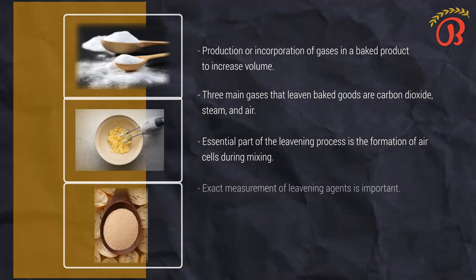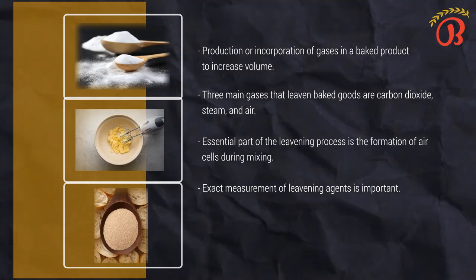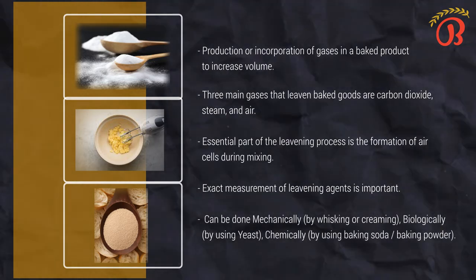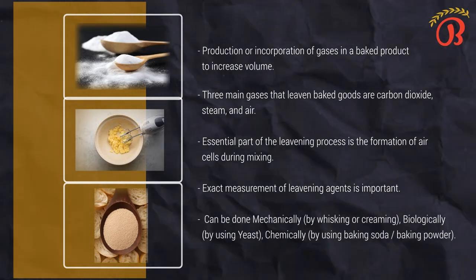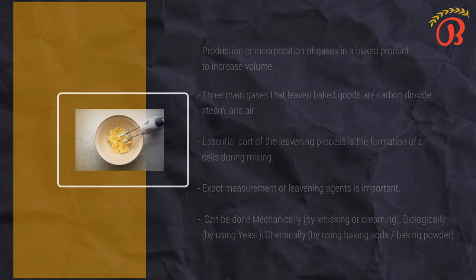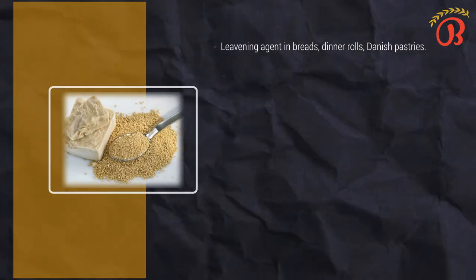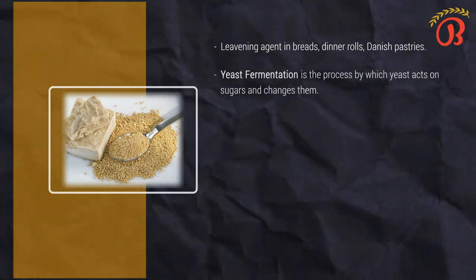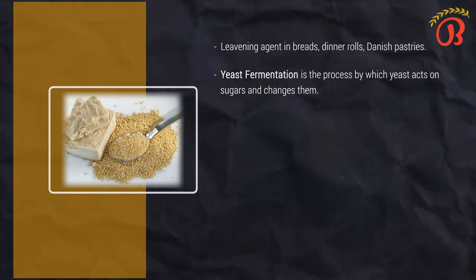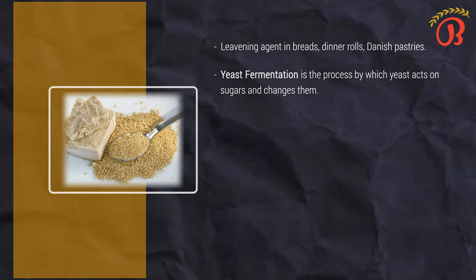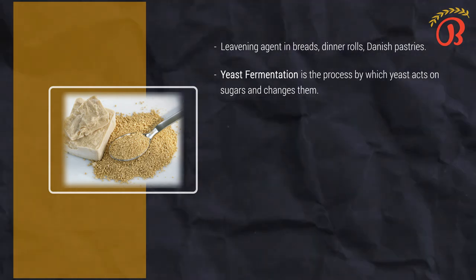Exact measurements of leavening agents are important because minor changes can produce major effects in the baked products. Leavening can be done mechanically by whisking or creaming, biologically by using yeast, or chemically by using baking soda or baking powder. Yeast is the leavening agent in bread, dinner rolls, Danish pastries, and similar products. Yeast fermentation is the process by which yeast acts on sugars and changes them into carbon dioxide gas and alcohol. This release of gas produces the leavening action in yeast products. The alcohol evaporates completely during and immediately after baking.